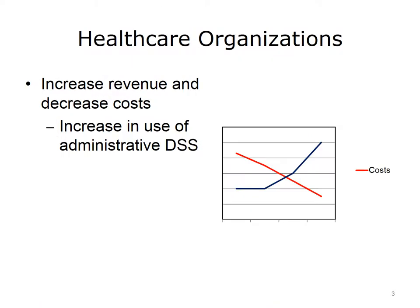For healthcare organizations, the interest in increasing revenues and decreasing costs has been a constant throughout the past 50 years. Beginning in the 1980s and continuing to the present, we have seen increased interest in using information systems to assist with this goal. Over the past decade, there are more administrative decision support systems, or DSS, largely used for monitoring costs and related administrative issues. These are not the same as clinical decision support systems, which were not getting as much use. The administrative systems have been used largely to make fiscal projections.